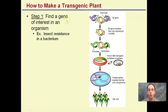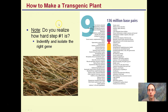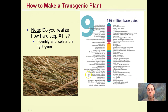The key part in finding a transgenic plant is finding a gene that's worth our while — a gene of interest from an organism. I don't think you realize how difficult this initial step is. Finding that gene of interest is literally like finding a needle in a haystack. It's hard to identify and isolate the specific gene. For example, chromosome 9 contains 136 million base pairs — and that's just one chromosome. Identifying the exact location and splicing that gene out is a very difficult, time-consuming, and expensive process. But it is possible.